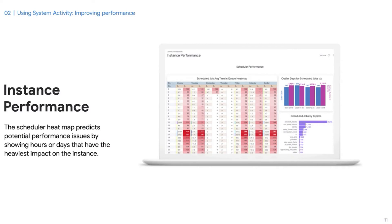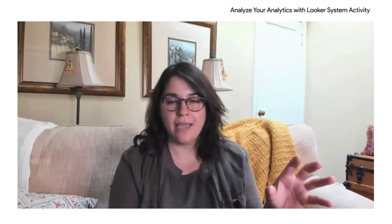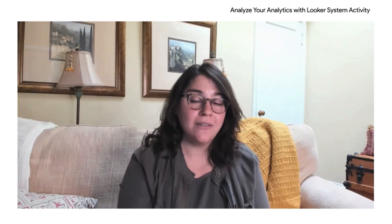The Instance Performance Dashboard is a great place to identify opportunities for increasing efficiency and optimizing performance. The scheduler performance heatmap gives you an excellent overview of all the various schedules, jobs, and queries executed on a given day and time. This makes it easy to understand if jobs are distributed uniformly or if there are peak hours overloading the instance. Scheduled queries tend to group around certain times of day, like Friday afternoons or Mondays before working hours, so this visibility helps plan activities efficiently.